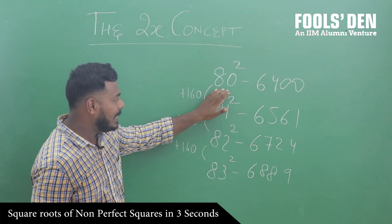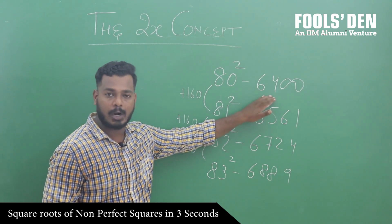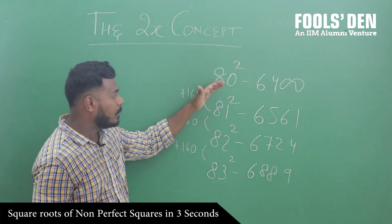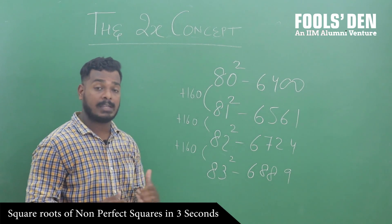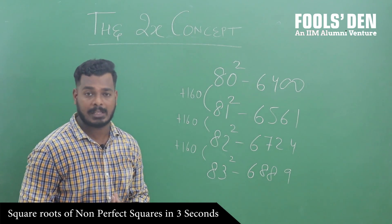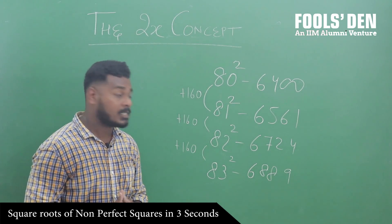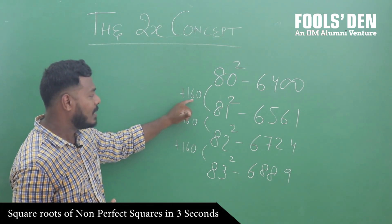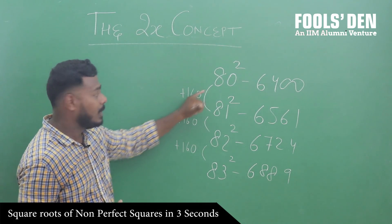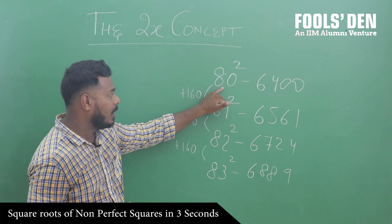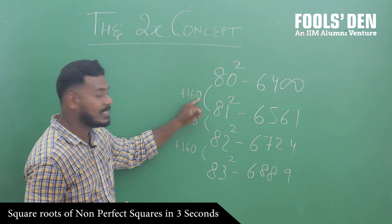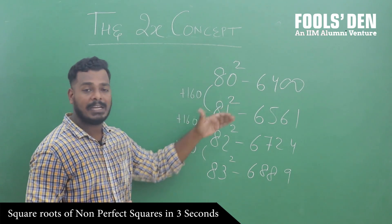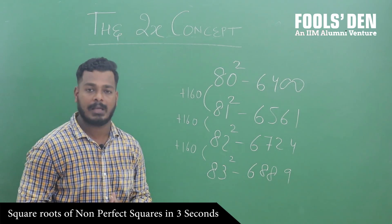80 का square, आप सबको पता है, 6400 होता है. क्या आपको पता है कि जब हम 80 से आगे बढ़ते हैं, तो हर square कितने से बढ़ता है? हर square approximately 80 का double, that is 160 — that is 2x. 80 को into 2 करेंगे, 160 आएगा. So हर अगला square approximately 160 से बढ़ता है.